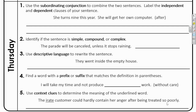Hello, third grade. Today we are going to finish up week 12 in your Green Grammar book by going over the Thursday section together. Number one: use the subordinating conjunction to combine the two sentences.